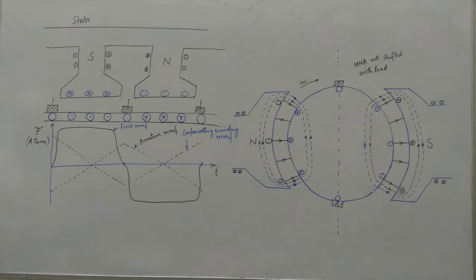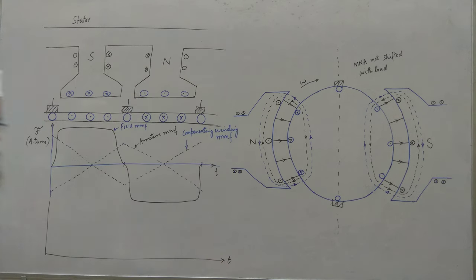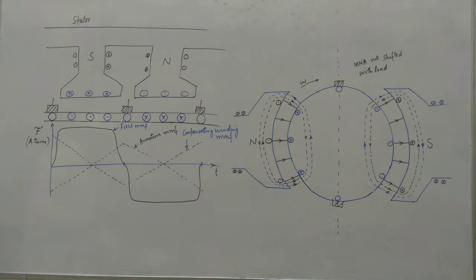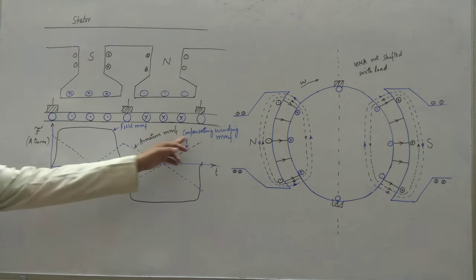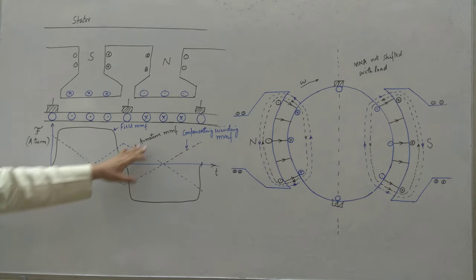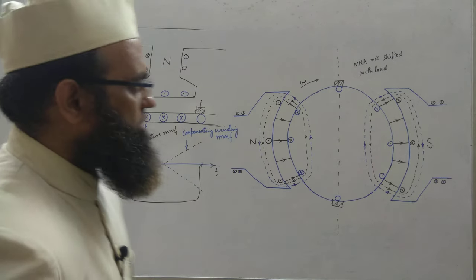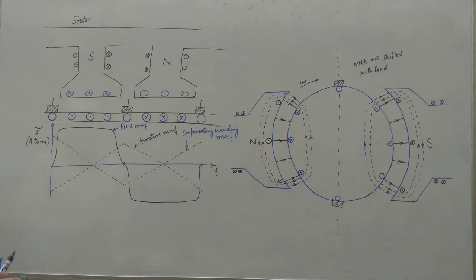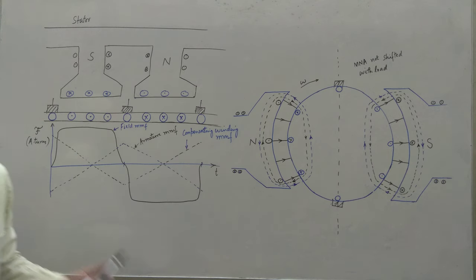Now if we plot our total MMF wave for the main field, we may observe that it is unaffected. Everywhere the armature MMF effect is getting cancelled by the compensating winding MMF. So the net result is just the original field MMF — the field flux is not disturbed at all. This confirms that compensating windings completely neutralize the armature reaction effect on the main field flux.